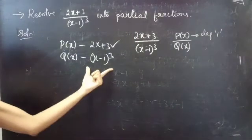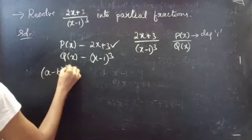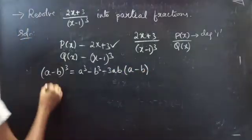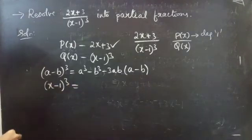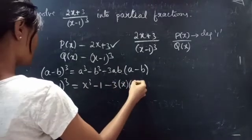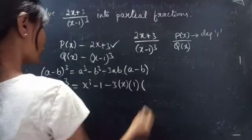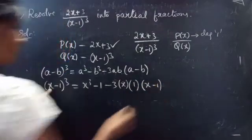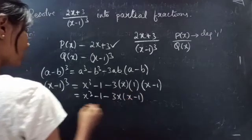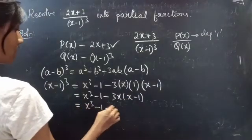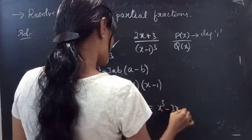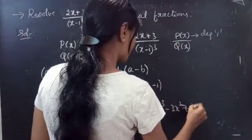We need to find the degree of (x - 1)³. We know that (a - b)³ = a³ - b³ - 3ab(a - b). So (x - 1)³ = x³ - 1 - 3x(x - 1), which equals x³ - 1 - 3x² + 3x, which we can write as x³ - 3x² + 3x - 1.